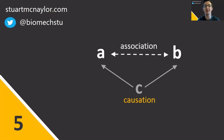Mistake number five is to treat a correlation or association between two variables as a cause and effect relationship. This should only be treated as causal when it is due to a manipulation or intervention, and even then we should be cautious about the role of third variables or confounding factors.